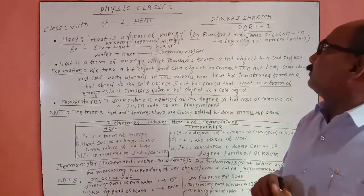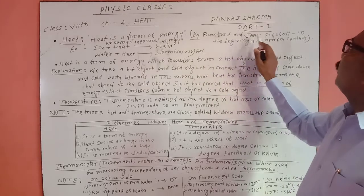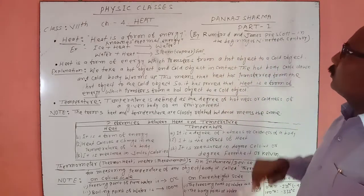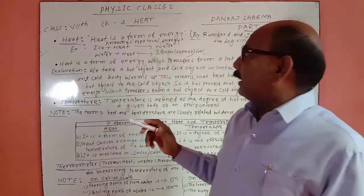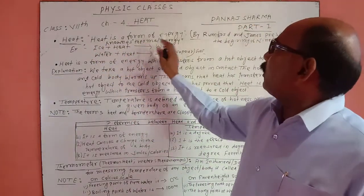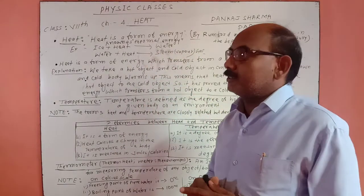In the beginning of the 19th century, two scientists, Rumford and James Joule, discovered that heat is a form of energy known as thermal energy.